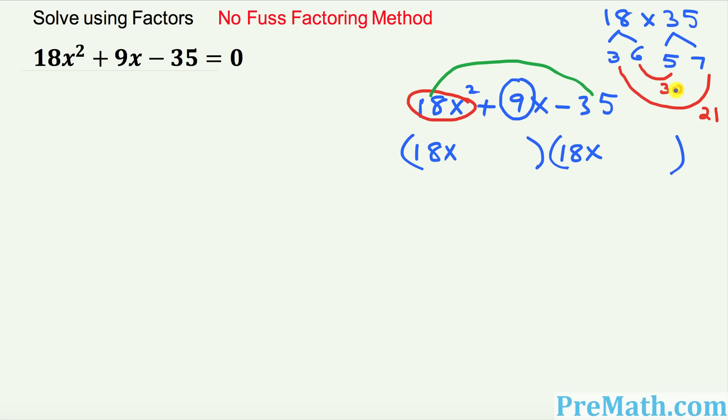See right now we got what? 30 and 21. If you subtract we're going to get what? 9. Since we have a positive 9 I'm going to make positive 30 and negative 21. So I want you to put down these positive 30 and negative 21 right up here. So positive 30 is going to go right up here and minus 21 is going to go right up here.